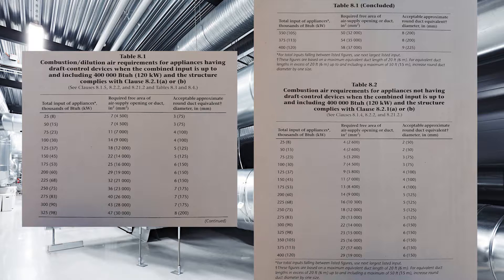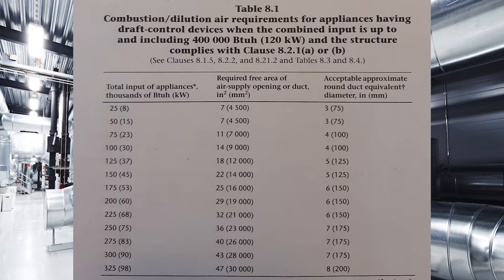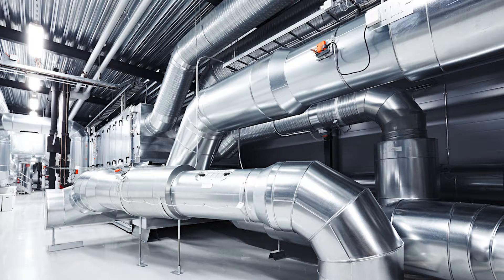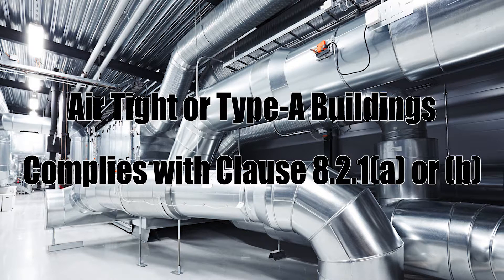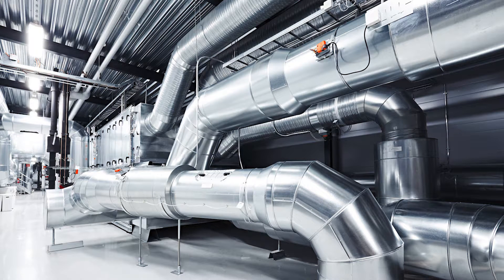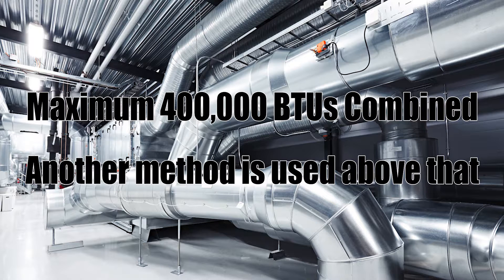We're going to be looking at tables 8.1 and 8.2 out of the gas code, which start on page 84 and go to 85. Table 8.1 says combustion dilution air requirements for appliances having draft control devices when the combined input is up to and including 400,000 BTUs (120 kilowatts) and the structure complies with clause 8-2-1A or B, meaning the building is built airtight or it is a type A building. These tables only go up to a combined input of 400,000 BTUs; anything above that needs to be sized a completely different way, which won't be discussed in this video.